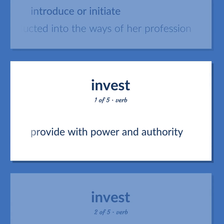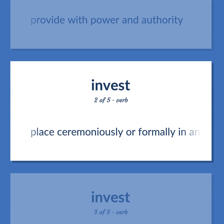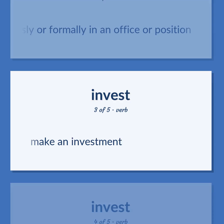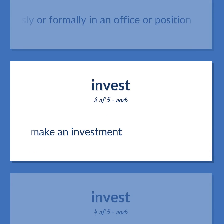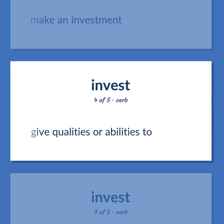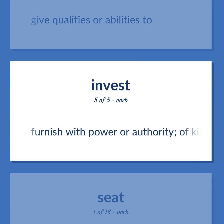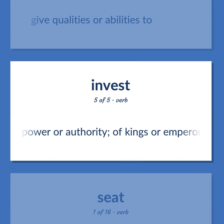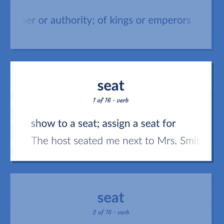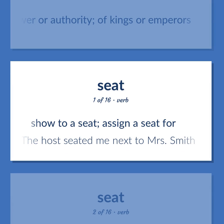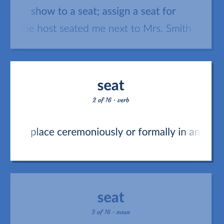Invest / Seat: Provide with power and authority. Place ceremoniously or formally in an office or position. Make an investment. Give qualities or abilities to. Furnish with power or authority; of kings or emperors. Show to a seat; assign a seat for — the host seated me next to Mrs. Smith. Place ceremoniously or formally in an office or position.